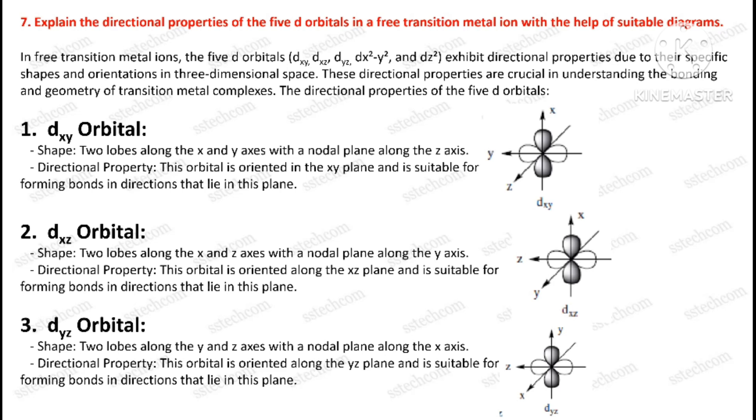Question number seven: Sketch the five d orbitals in a free transition metal ion with the help of suitable diagrams.